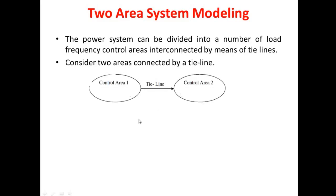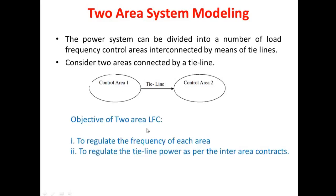Before getting into detailed modeling of the two-area system, we must understand the objectives of load frequency control for a two-area system. The first main purpose is to maintain frequency within its own control area. The second objective is to regulate the power flow in the tie line connecting the two areas. So these two objectives — frequency regulation within the area and tie line power flow regulation — are the objectives of two-area load frequency control.